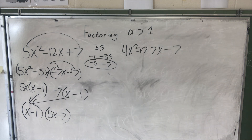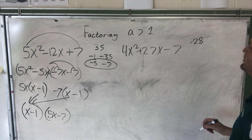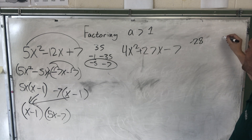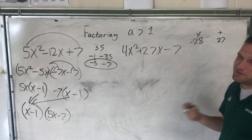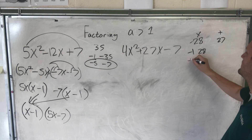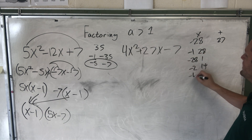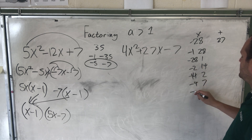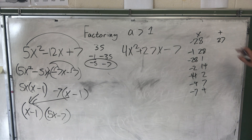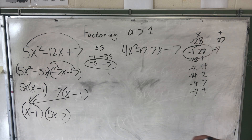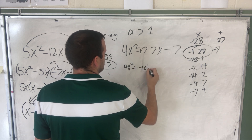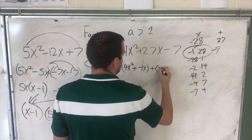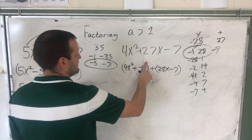Let's try the next one. 4 times negative 7 is negative 28. What two numbers multiply to negative 28 but add to 27? At least one needs to be negative. Let's list pairs: negative 1 and 28, negative 28 and 1, negative 2 and 14, negative 14 and 2, negative 4 and 7, negative 7 and 4. The first one: negative 1 plus 28 is positive 27. So we split: 4x² minus 1x plus 28x minus 7.